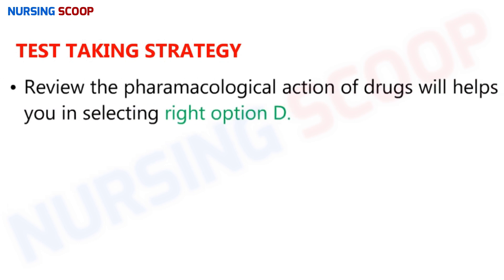Test-taking strategy: if you have difficulty solving these types of questions, review the pharmacological action of various drugs and the antidotes available in case of overdose. The correct option is D, as atropine is the antidote to edrophonium.